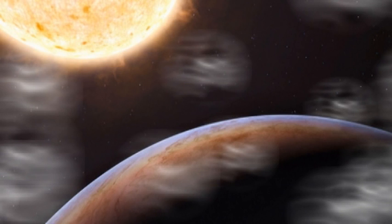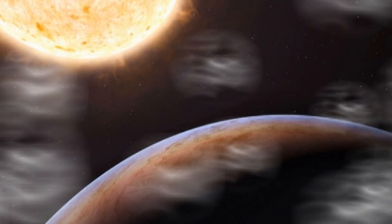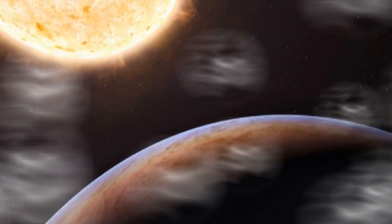The find may also force astronomers to rethink their ideas about planet formation and survival, researchers say, since it's the first planet ever discovered circling a star that is both very old and extremely metal-poor. Metal-poor stars typically lack elements heavier than hydrogen and helium.